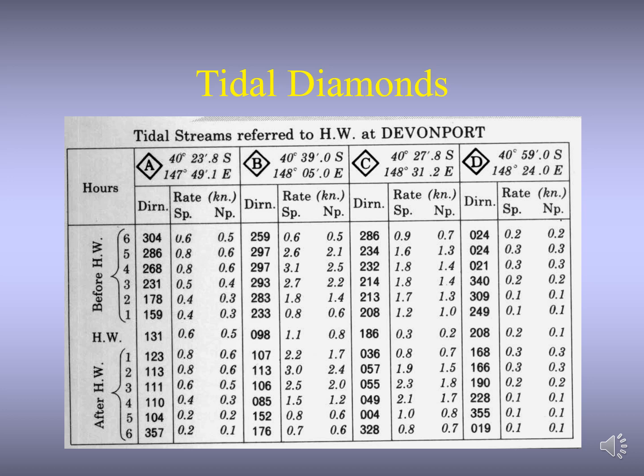Tidal diamonds are called tidal diamonds because you can see the diamond shapes at the top of the chart here. The diamond shapes or rhombus shapes have letters inside them. Tidal diamonds are actually symbols available on the nautical chart that indicate the direction and the speed of tidal streams, and they consist of a capital letter inside the diamond or rhombus, normally colored in pink.